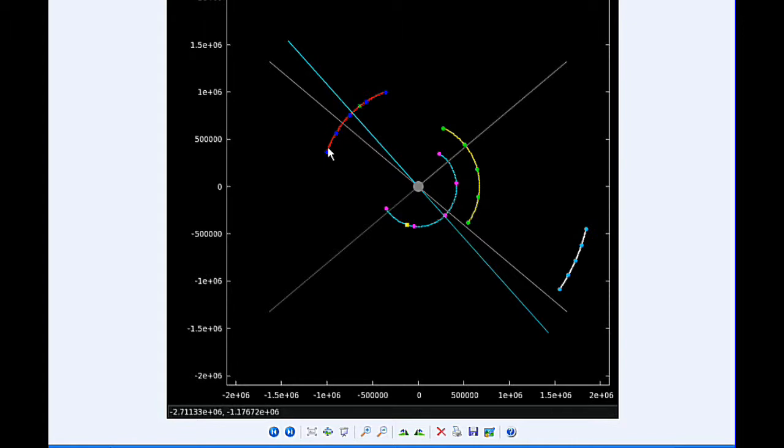At 12:47 UTC, the transit of Ganymede ends. At 13:05 UTC, the shadow of Ganymede ingresses. So you can see that Ganymede is first transiting, and then its shadow goes on Jupiter from Earth's point of view.